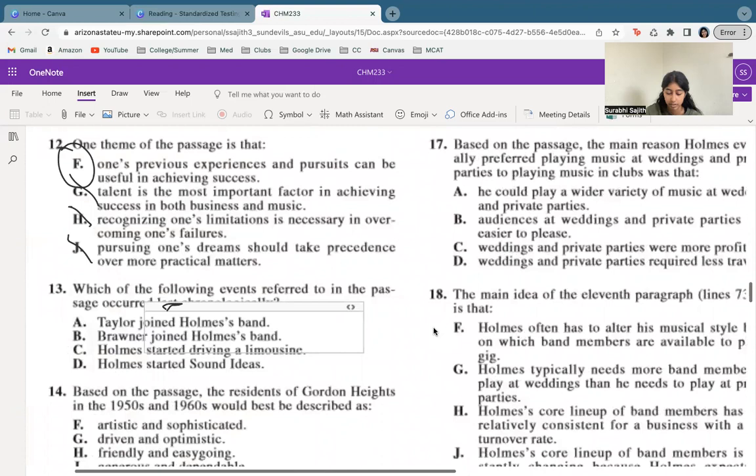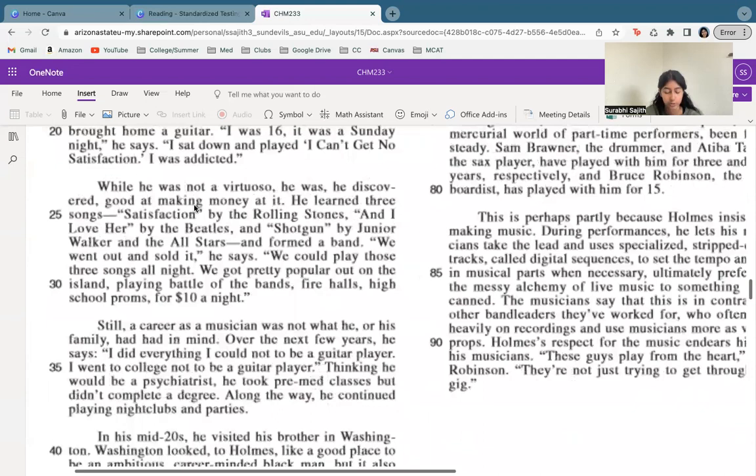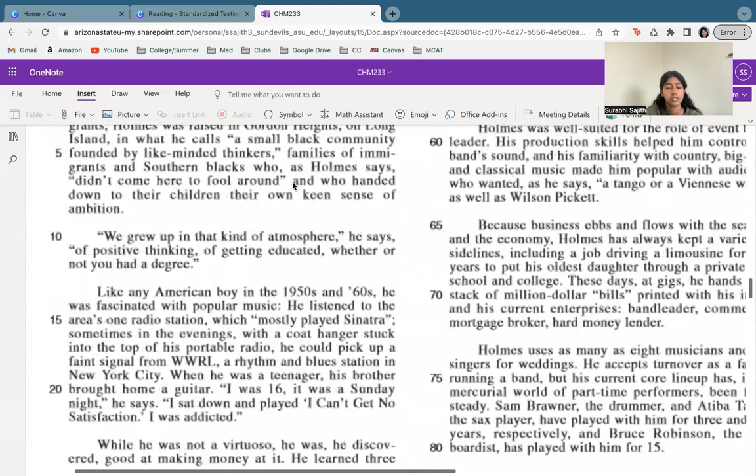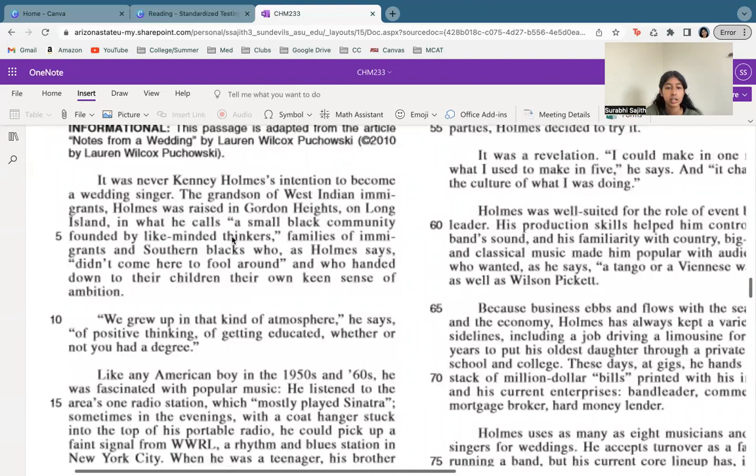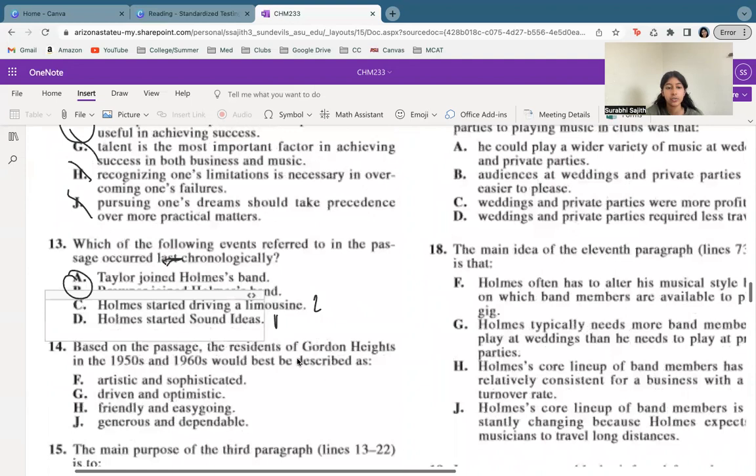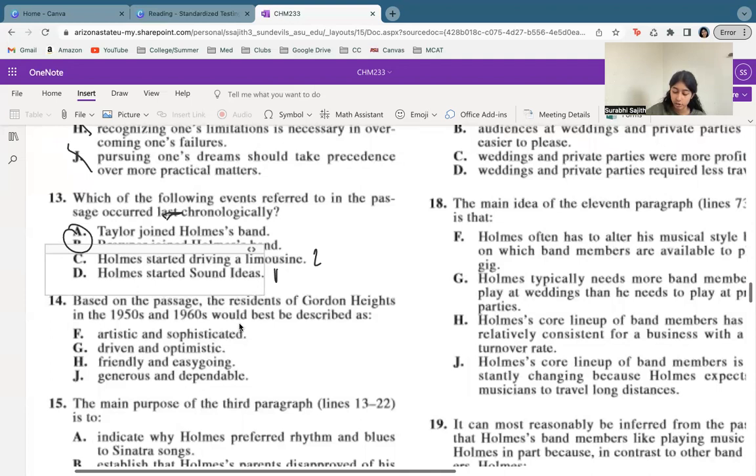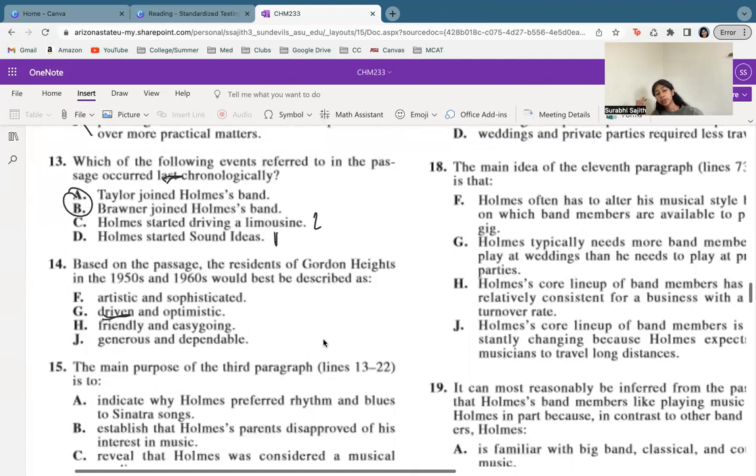Now, if we're looking at number 14, based on the residents of Gordon Heights in 1950s and 60s, they would be best described as which? If we look at the options, we see, let's see, let's go back to the passage where they were talking about this. So like any American boy in the 50s and 60s, he was fascinated. Now let's see, it's even earlier. All right, Gordon Heights, founded by like-minded thinkers, didn't come here to fool around. Ambition. So ambition, let's look for a synonym for ambition here.